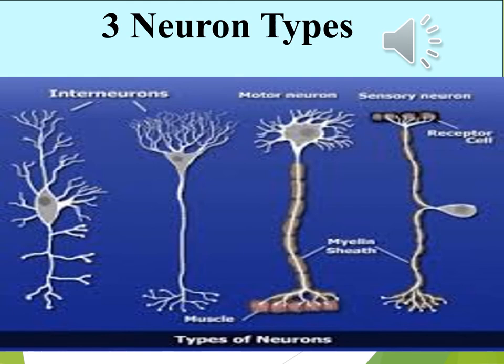Let's start with motor neurons — 'motor' means movement, so they go to the muscles and allow us to move our bodies. Sensory neurons are embedded in our senses — in your eye, ear, tongue, and even in your skin — allowing us to perceive the world and feel our body. But the most common type by far is the interneuron, which acts as a middleman passing information between other neurons.